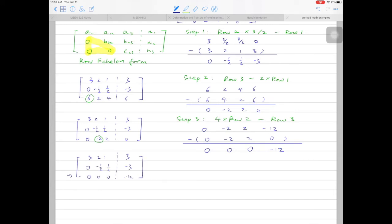What the last row of the new matrix tells us is 0 times z is equal to minus 12. Therefore, there's no solution existing.